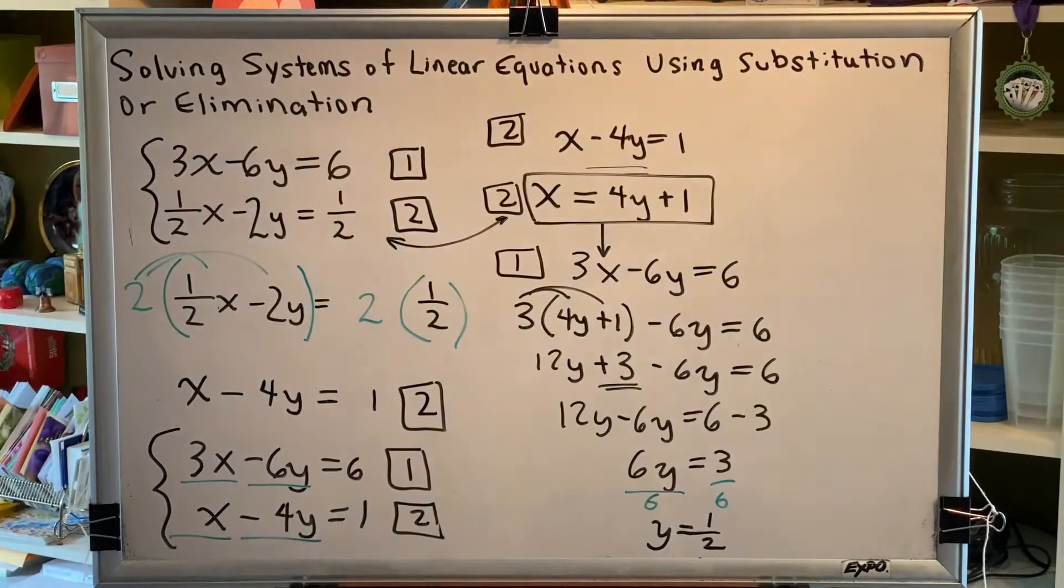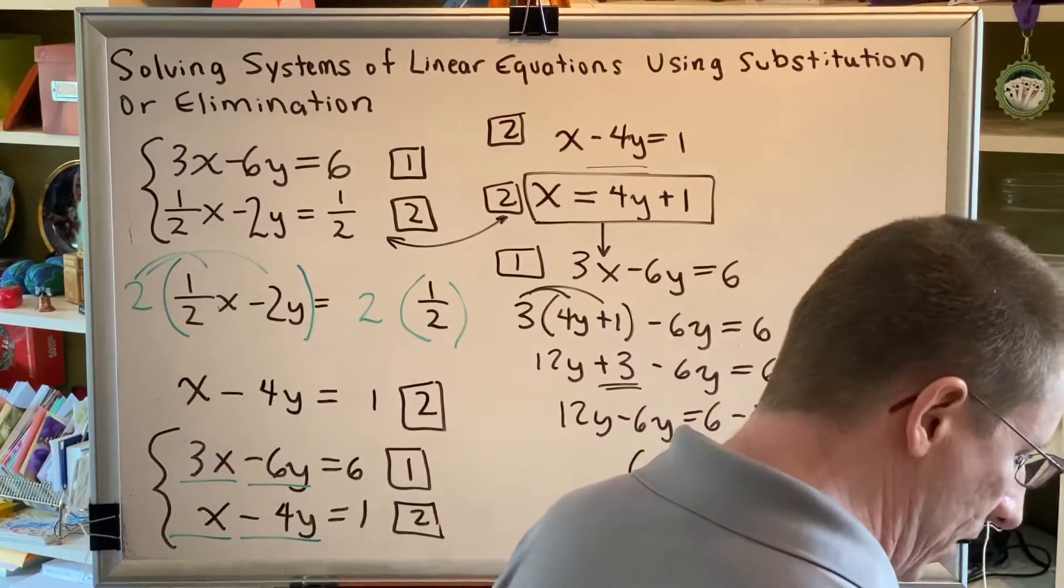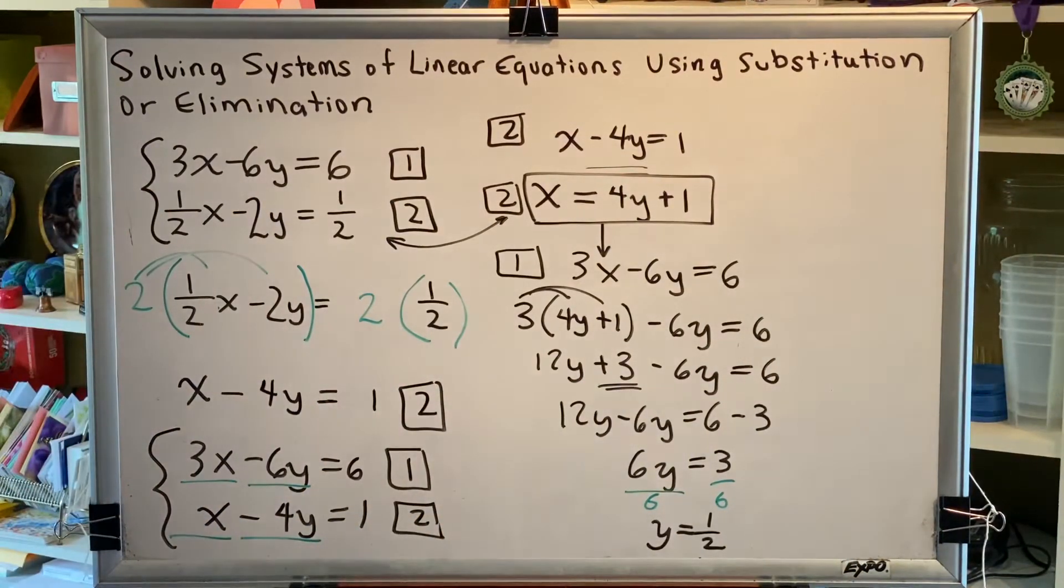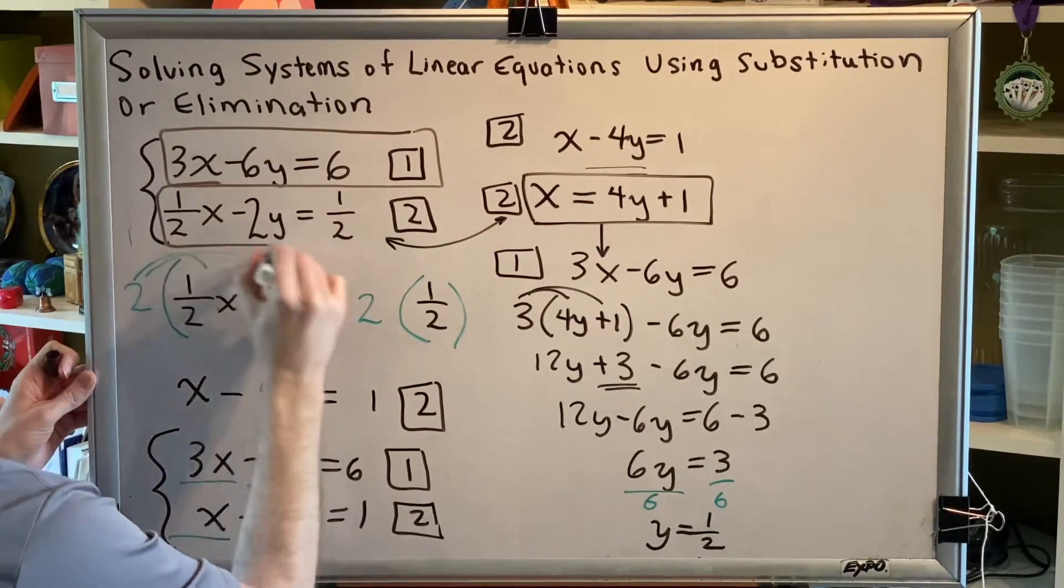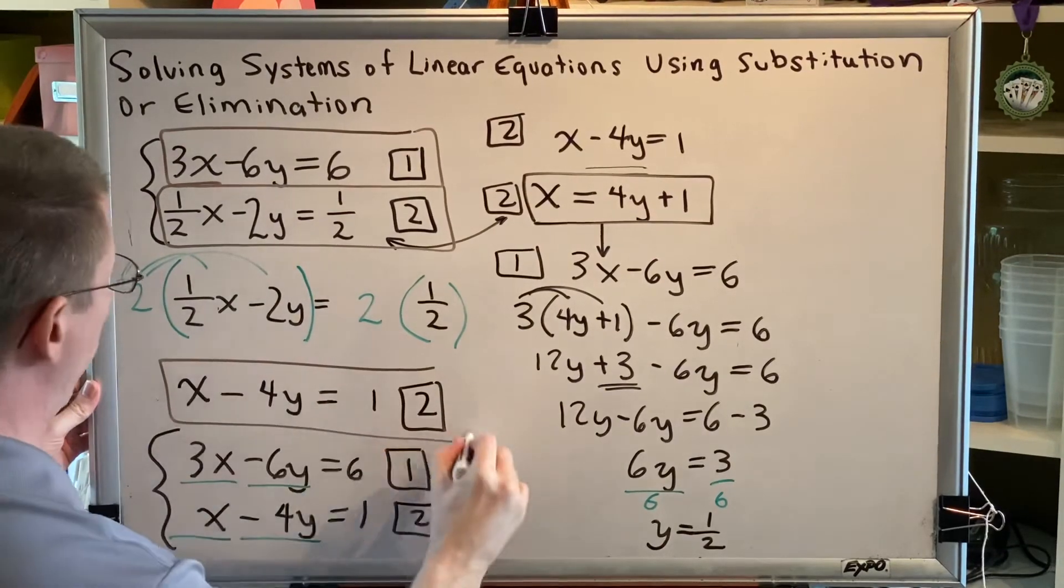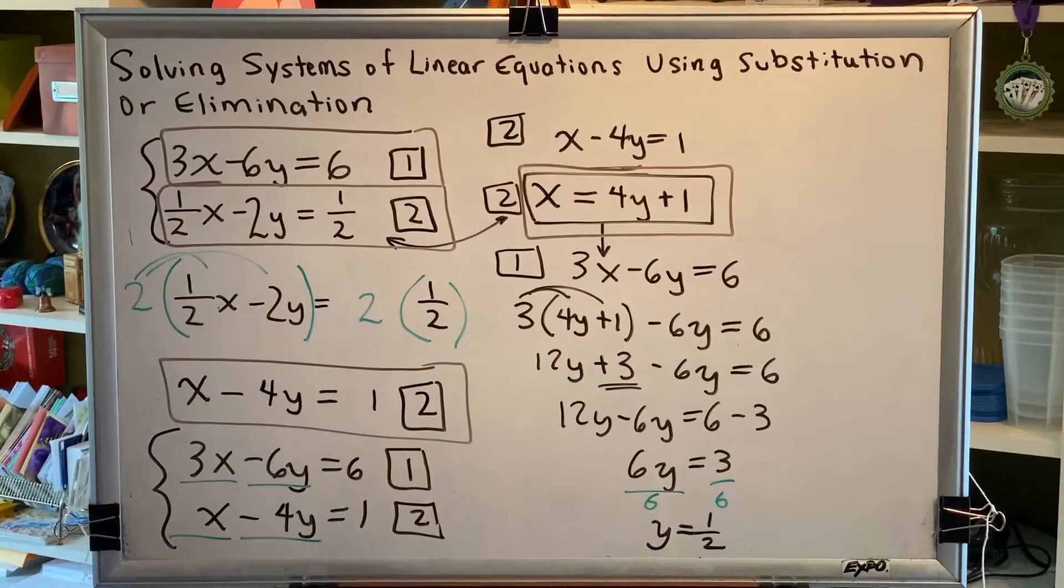We've now solved for the value of the remaining variable. Now we have to plug back in to any equation in our problem that still contains an x and a y and replace the y with 1 half so we can find the value of x. This is where you as the student need to make a very important decision. Which equation should you plug back into? We have original equation 1, original equation 2, equation 2 with all of the fractions removed, and equation 2 where we've solved for x. All four of these are equations that contain x and y. So which one is best?